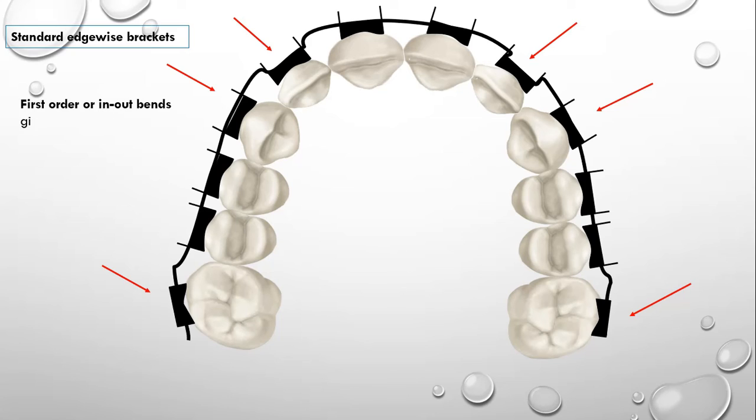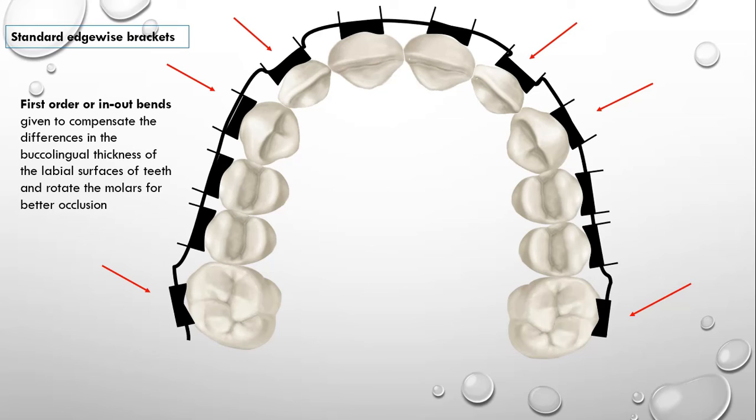By definition, first order or in and out bends are given to compensate the difference in the buccolingual thickness of the labial surface of the teeth and are given to rotate the molars for better occlusion. These were the bends, first order bends, which were given in the final stages when we used to use standard edgewise brackets.